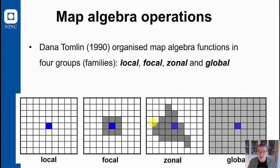Map algebra operations date back to 1990 when Dana Tomlin introduced this concept and she grouped them into four families: the local, focal, zonal, and global map algebra functions, classified by their scope or the extent of their processing.